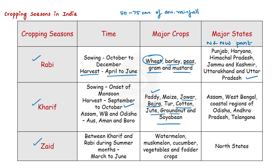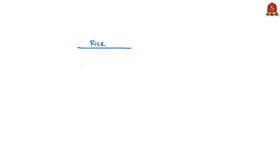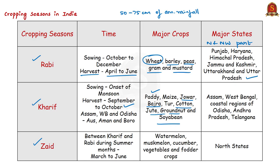Rice is the staple food of the majority of people in India, and India is the second largest producer of rice in the world after China. It requires high temperature above 25 degrees Celsius and high humidity with rainfall above 100 centimetres; in areas of less rainfall, it grows with the help of irrigation. Important rice-growing regions include Assam, West Bengal, coastal regions of Odisha, Andhra Pradesh, Telangana, Tamil Nadu and Kerala. After the green revolution, paddy became an important crop of Punjab and Haryana. In states like Assam, West Bengal and Odisha, three crops of paddy are grown in a year: Aus, Aman and Boro.